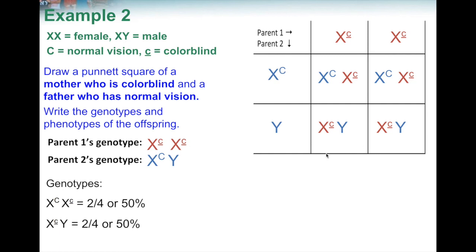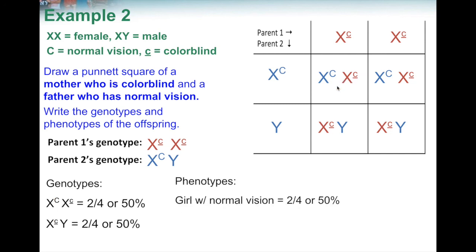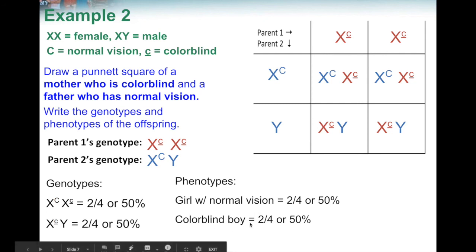For phenotypes in this second cross: the two X capital-C, X lowercase-c boxes represent girls. Because they have a capital C, they have normal vision — so that's girls with normal vision, 2 out of 4, 50%. The two X lowercase-c, Y boxes represent boys with only a lowercase c, meaning they are colorblind — boys who are colorblind, 2 out of 4, 50%. So every time this couple has a girl, she will have normal vision, but every time they have a boy, their son will be colorblind.